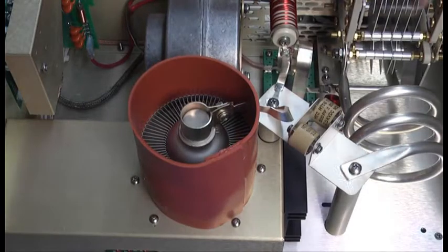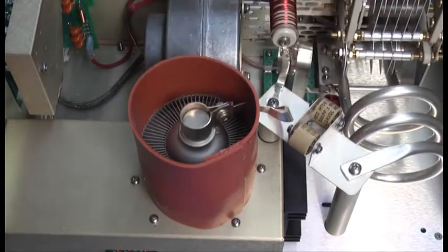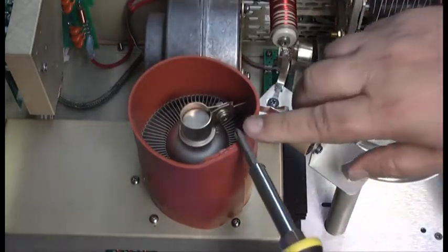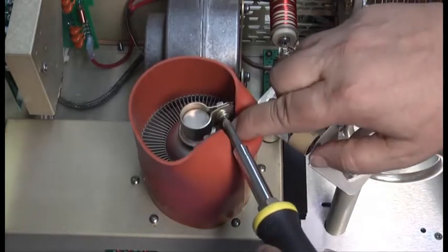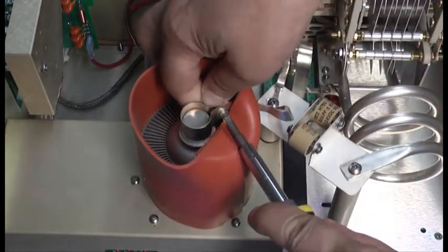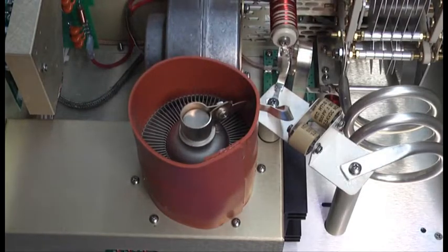We tighten that lead down. Position the anode clamp firmly on the anode and tighten that screw. Okay, that's secure.